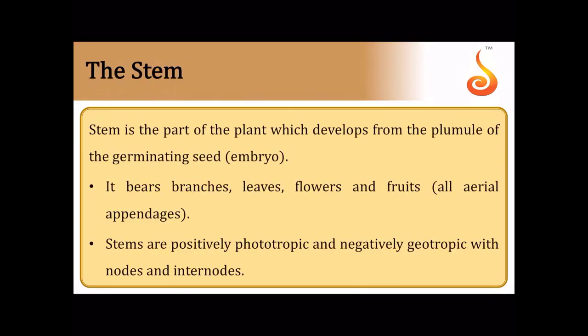Now let us discuss the stem. The stem is the aerial part, though not all stems are aerial — some grow on the soil surface (sub-aerial) and some grow underground (underground stem modifications). The typical stem grows upright, away from the ground (negatively geotropic) and towards light (positively phototropic). The stem bears branches, leaves, flowers, and fruits.